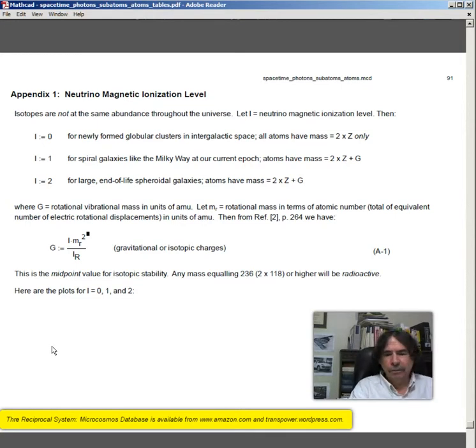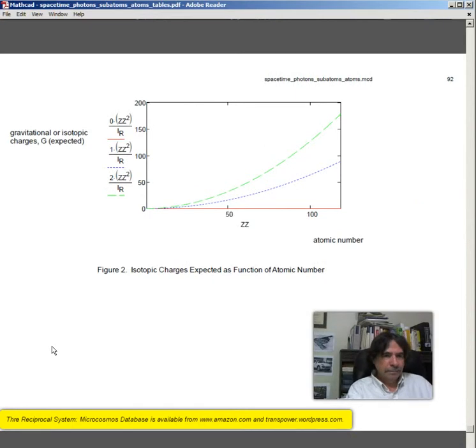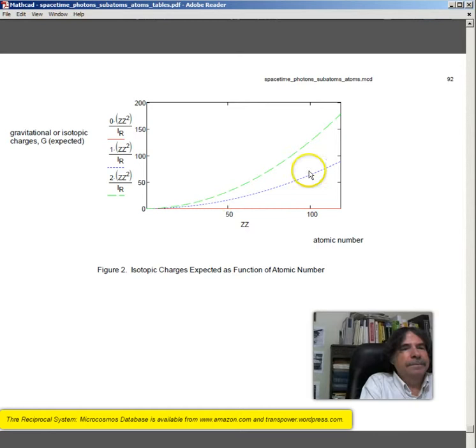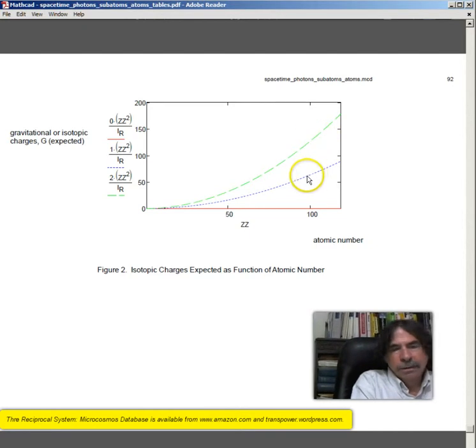Here are the plots for i equals 0, 1, and 2. So you can see the difference here. So this is for the large ceroidal galaxy. This will be for our Milky Way or generally any spiral. And, of course, now I study the charges of g equals 0.